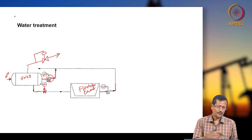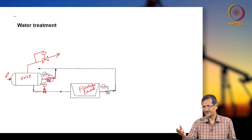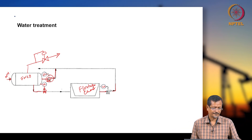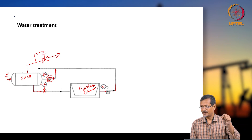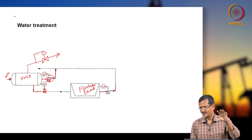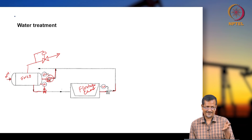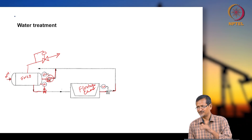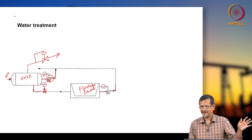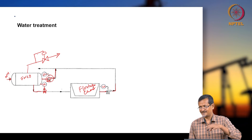Later we will discuss in detail about water treating systems — many ways to remove oil particle from water or water particle from oil. Here you are getting mostly water and removing oil particles. But in the oil case, you are removing water from oil because oil gives money. Here you have to dispose water, so you have to remove oil particles and use the recovered oil.